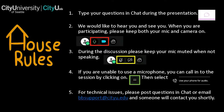When you're not speaking please keep your mics muted so we're not getting any background noise. If you do not have a microphone, you can call in by clicking on the menu icon at the top of your screen, selecting 'use your phone for audio.' If you experience any technical issues, please use chat to let us know, or if you lose connectivity in Collaborate, try to log back in several times. If that doesn't work, email us at bbsupport@cityu.edu — we are monitoring our emails and will help you get back in.